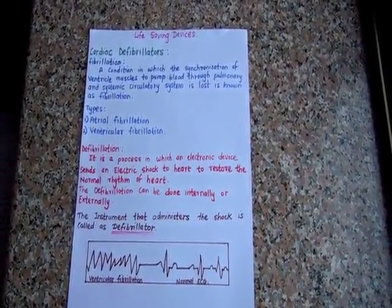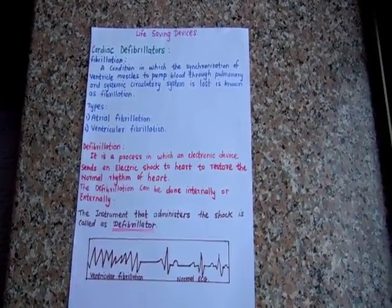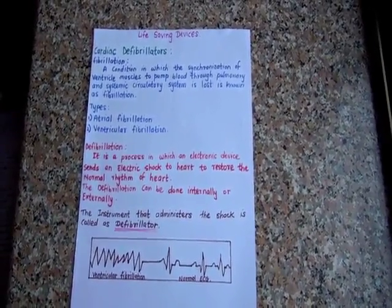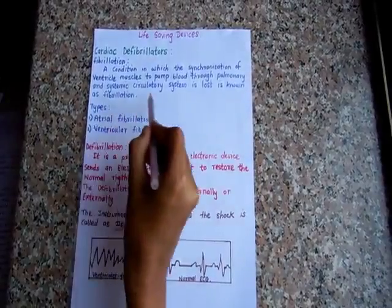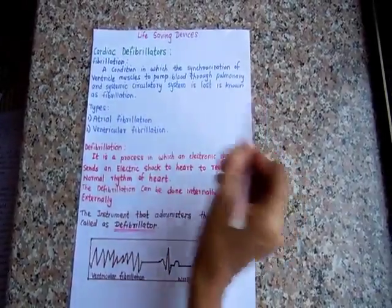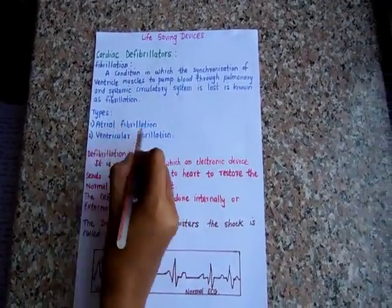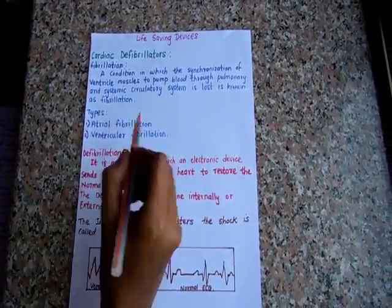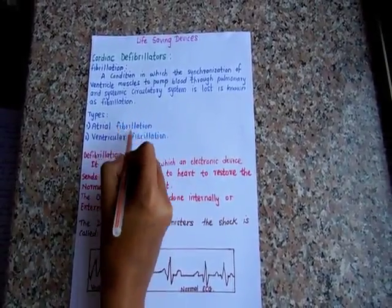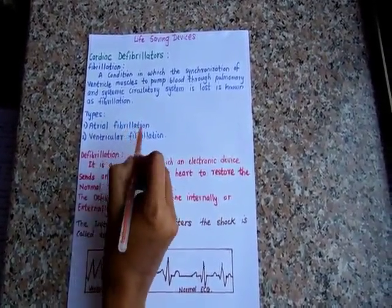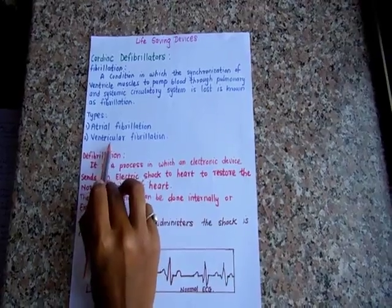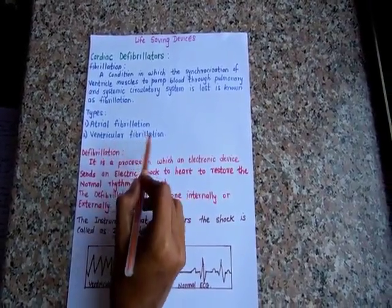If there happens a condition in which the synchronization of the ventricle muscles to pump the blood to the pulmonary and systemic circulatory system is lost, it is known as fibrillation. The fibrillation can be of two types: atrial fibrillation and ventricular fibrillation.